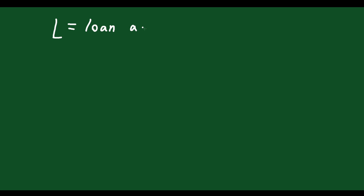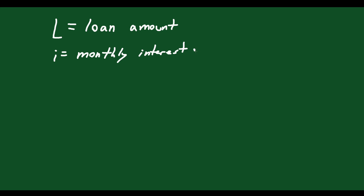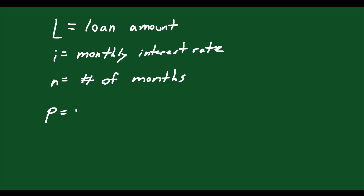This is what I call the geometric series mortgage problem. I'm going to define some variables: L is equal to your loan amount — that's how much money you're borrowing. I is equal to the monthly interest rate. N is equal to the number of months, and P is equal to the monthly payments.